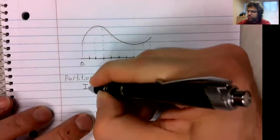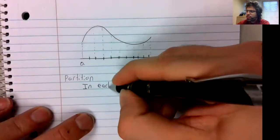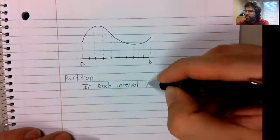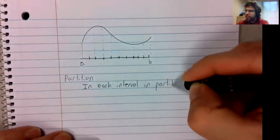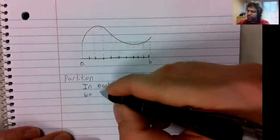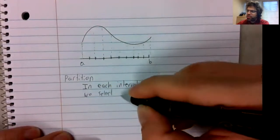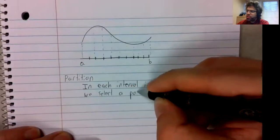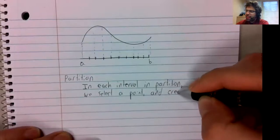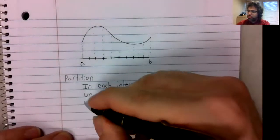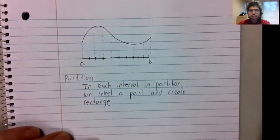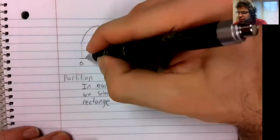Then, in each interval in the partition, we select a point and create a rectangle. How do we create a rectangle?